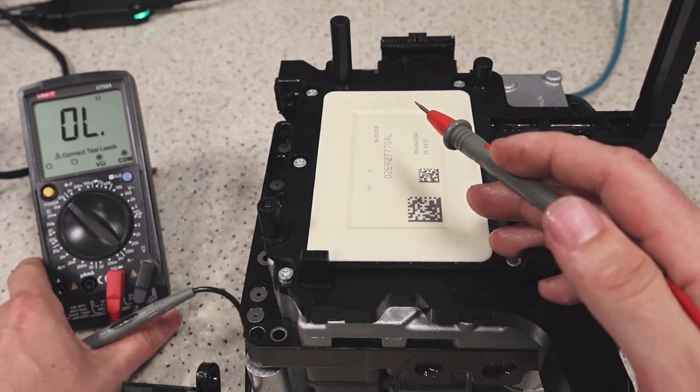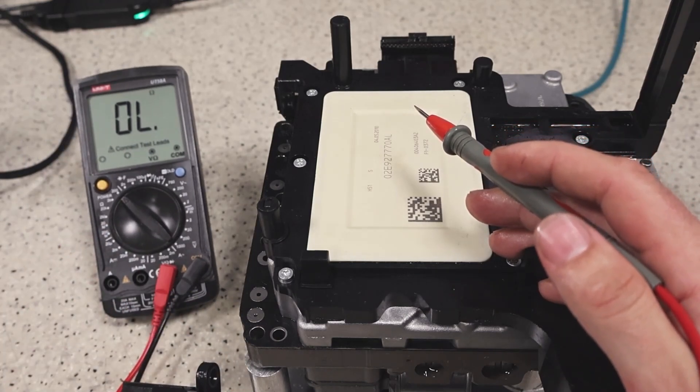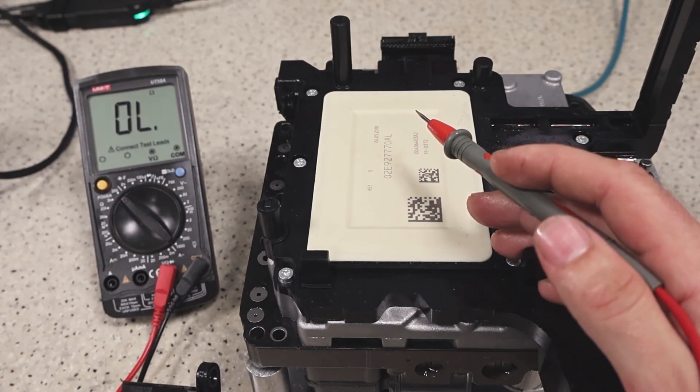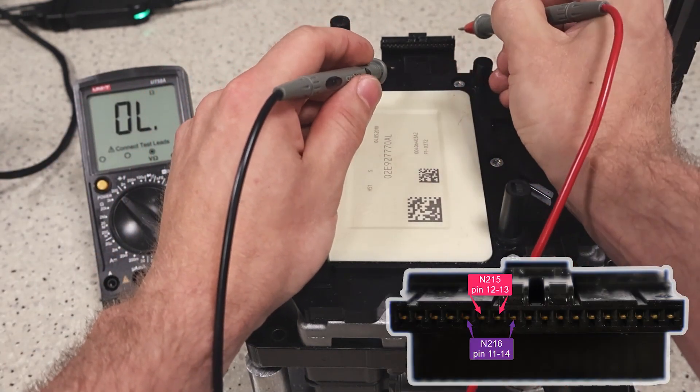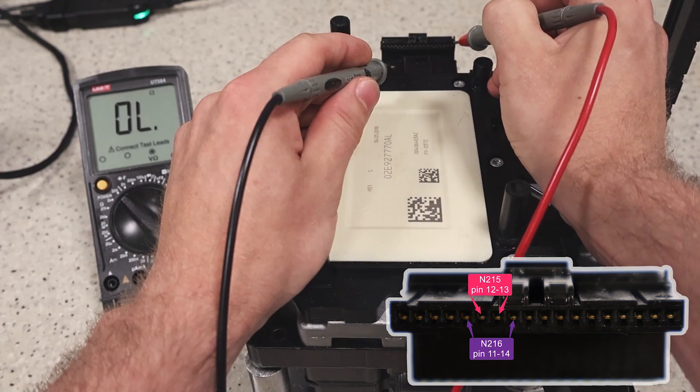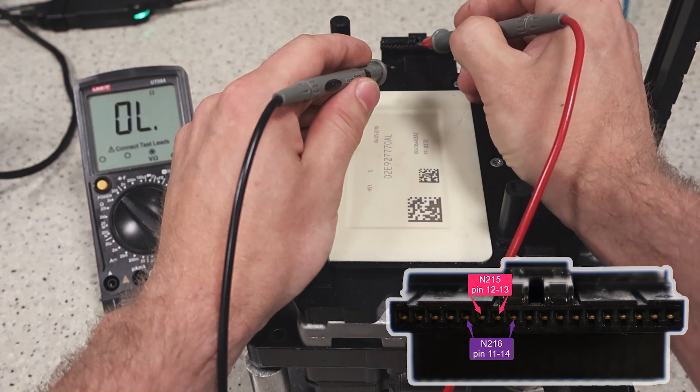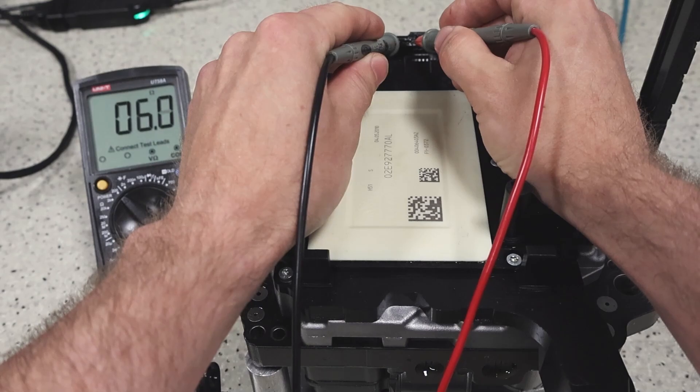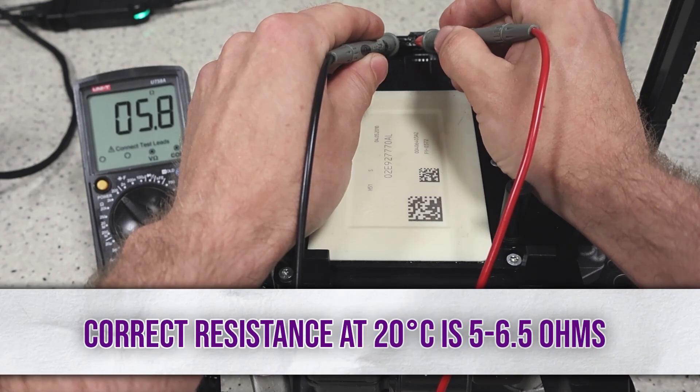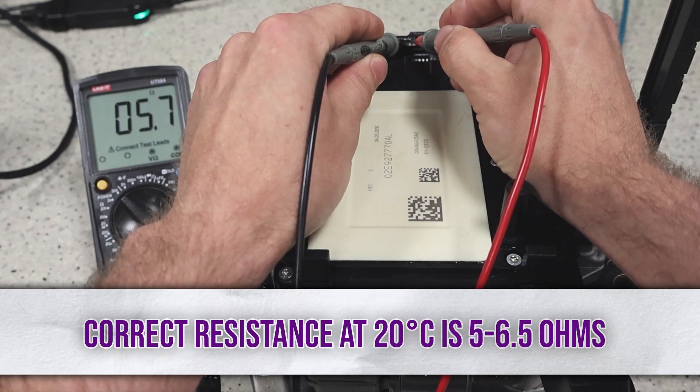Set the meter to ohm measurement, and for valve N216, it's pin numbers 11 and 14, counting from this side. We have a resistance between 5 and 6 ohms, which means the tape and the coil in the valve are functional.